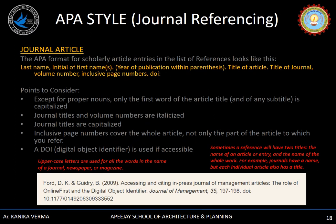For referencing a journal article, the APA order is: author's last name, comma, initial of first name, year of publication in brackets, title of article, title of journal, volume number, inclusive page numbers, and DOI if available. Key points: only the first word of the article title is capitalized; italics are used for journal titles and volume numbers; journal titles are capitalized; inclusive page numbers cover the whole article; and a DOI must be provided if available.